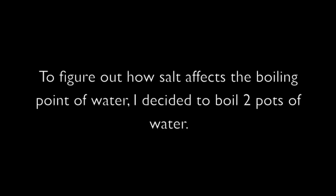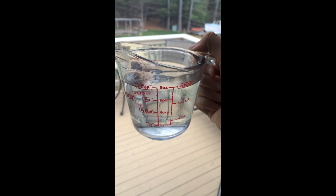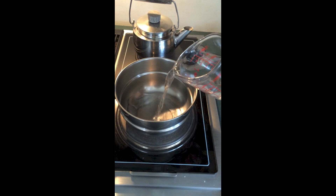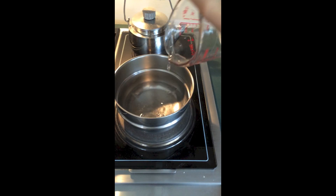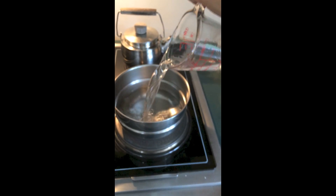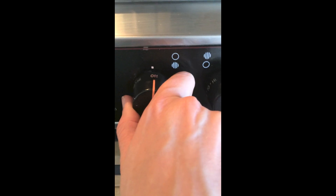To figure out how salt affects the boiling point of water, I decided to boil two pots of water — one with salt and one without. I placed two cups of water into each pot, then turned the stove on high.